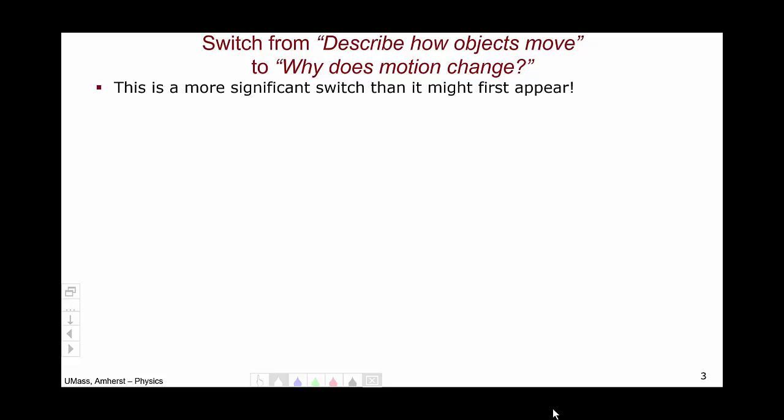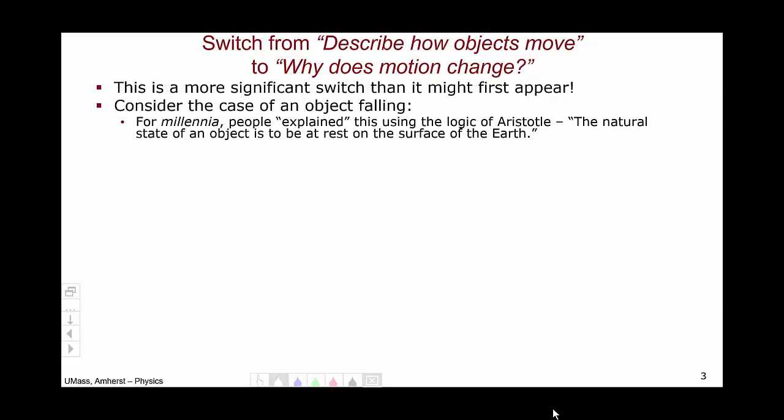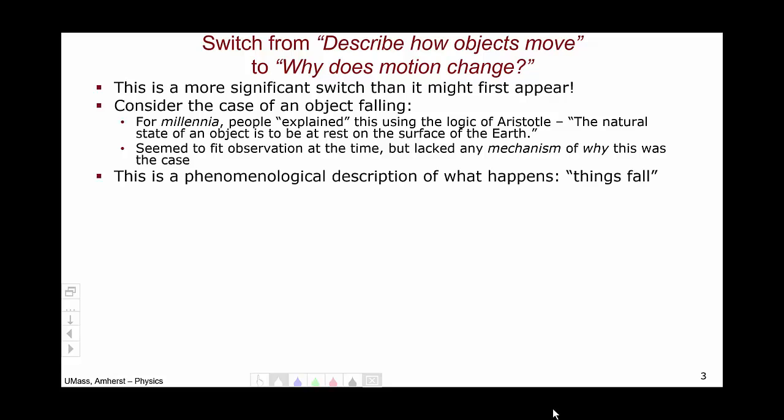This is a more significant switch than it might first appear. Consider the case of a falling object. For millennia, people explained that objects fall using the logic of Aristotle. Aristotle posited that the natural state of an object is to be at rest on the surface of the earth. This explanation seemed to fit all observations at the time, but lacked any mechanism of why this was the case.